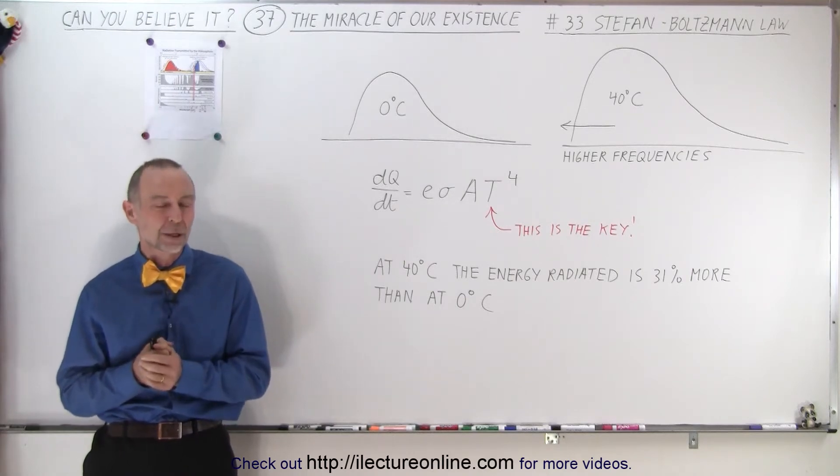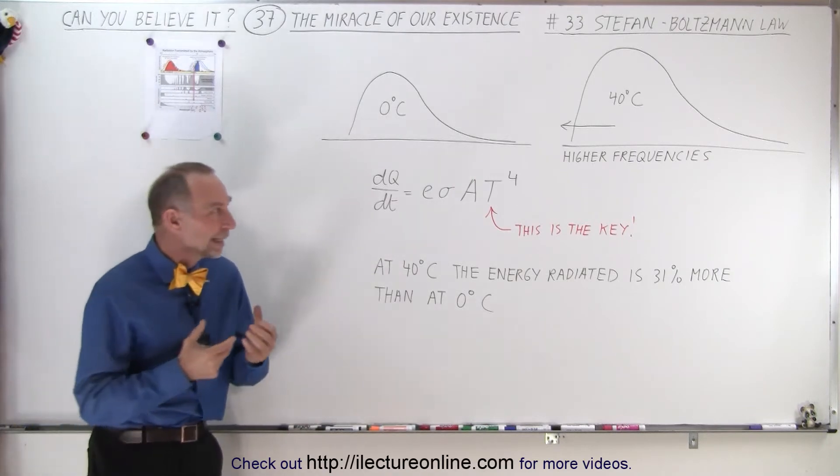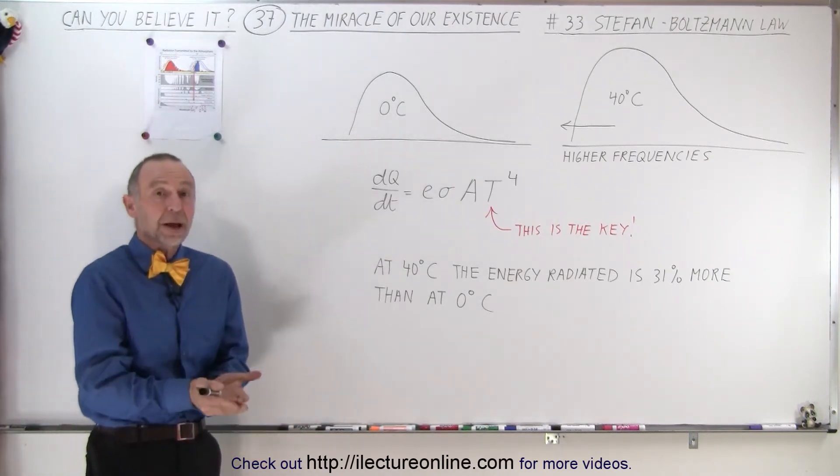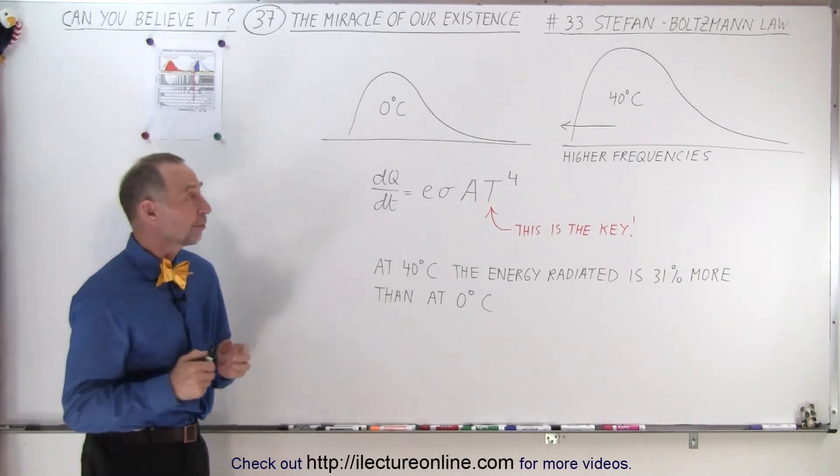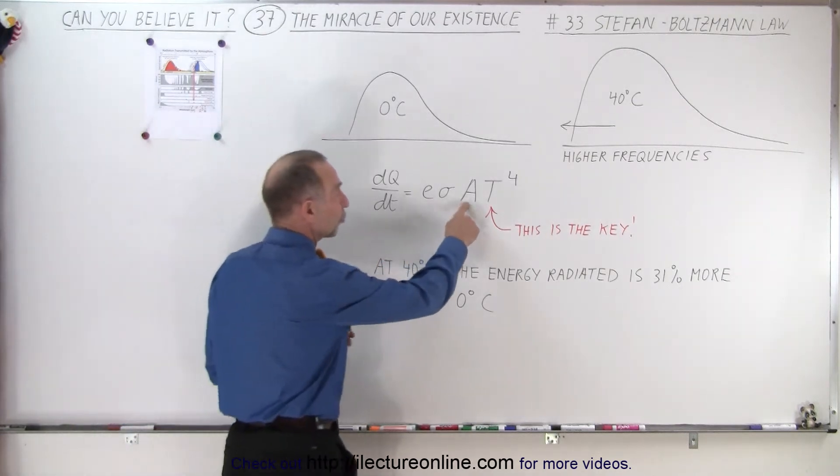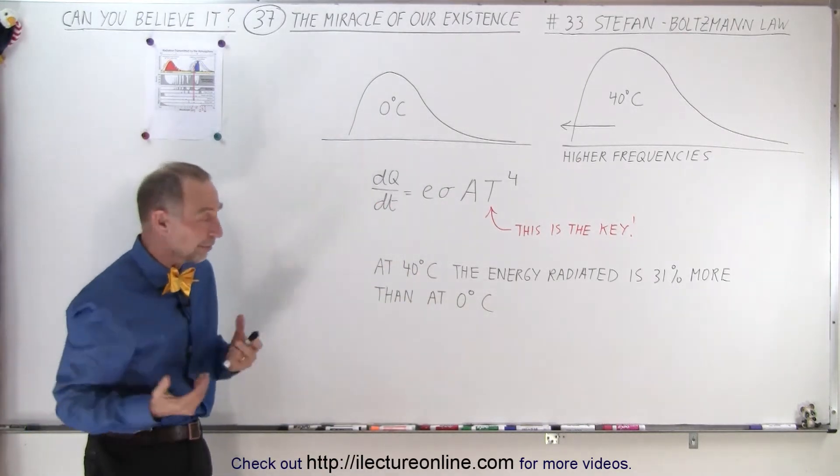What is that? Well, it turns out that Stefan-Boltzmann discovered that the amount of radiation coming from an object, including the radiation coming from the earth, depends upon two things. First, it depends upon the surface area. The more surface area you have, the more radiation that will go out, of course.